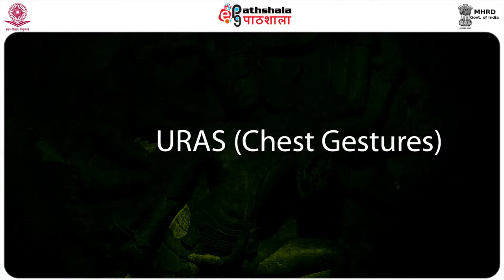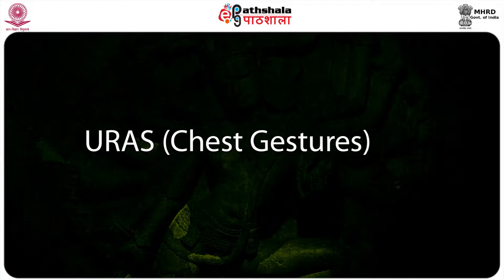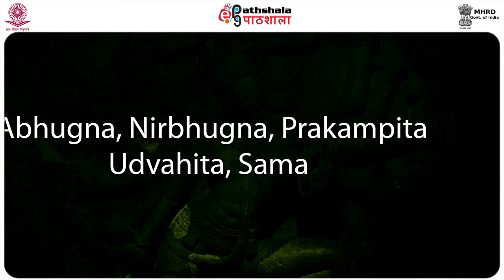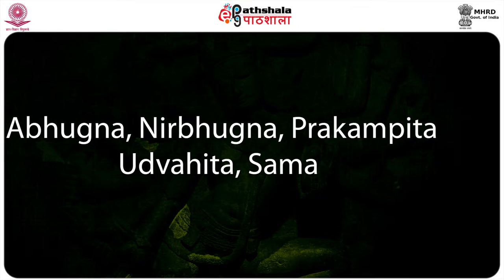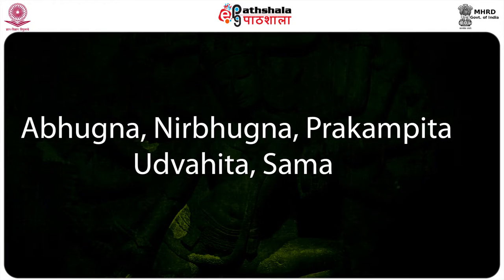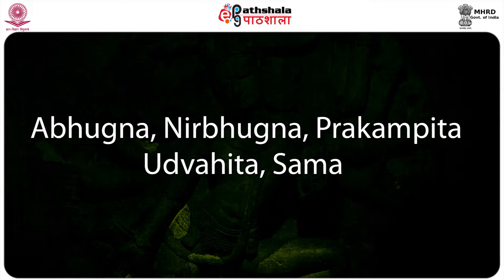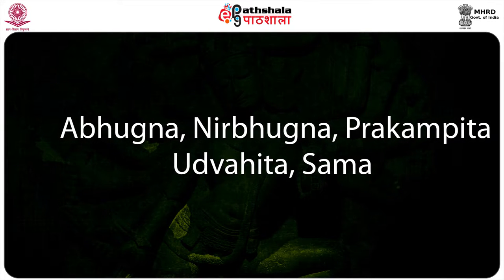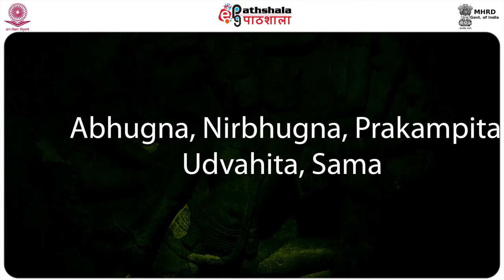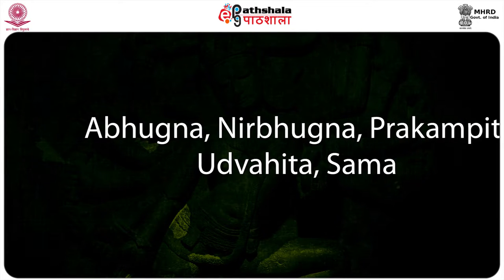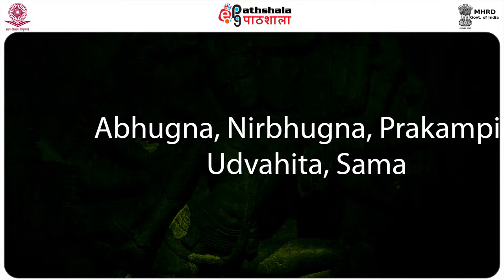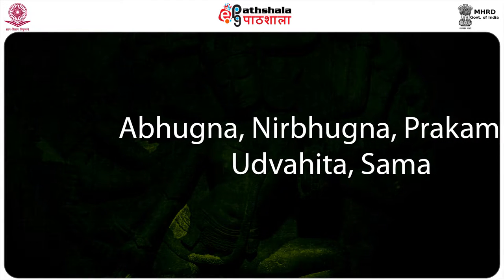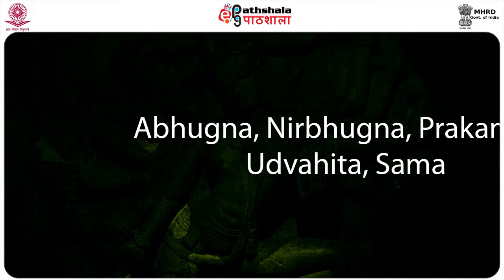The next is Uru bheda, and these are of five types. Abhudhnya: feeling embarrassment, despair and fainting. Nirbhudhnya: applicable in paradise, expressing resentment and excessive arrogance. Prakampita: laughter, weeping, exhaustion and terror. Udvahita: deep breathing, looking at objects placed high above, yawning. Samma: symmetrical state of limbs.